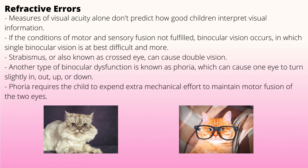Regarding refractive errors: measures of visual acuity alone do not predict how well children interpret visual information. Other determinants include the ability to see objects in low-contrast and low-lighting conditions, as well as visual field problems. If the conditions for motor and sensory fusion are not fulfilled, binocular vision problems occur, making single binocular vision difficult.